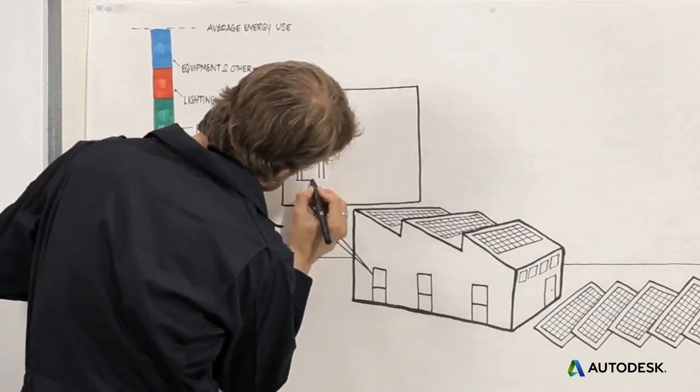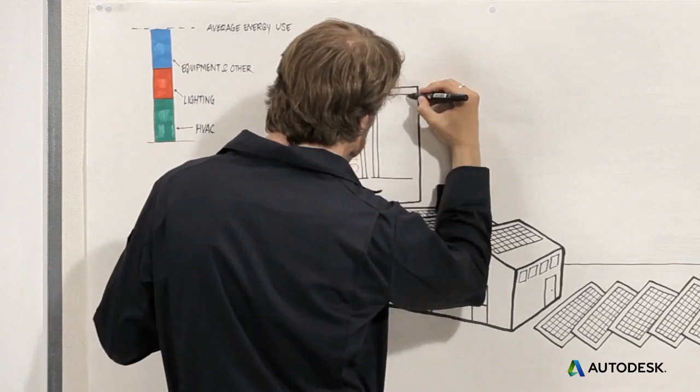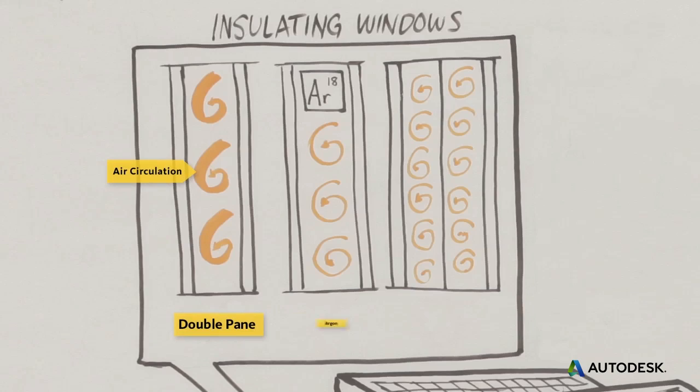Convection happens inside building elements too. Installing argon-filled windows and triple-pane windows reduces the convection of heat between panes.